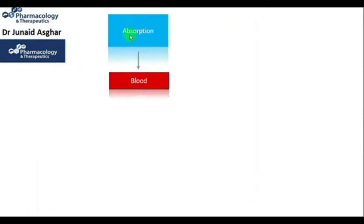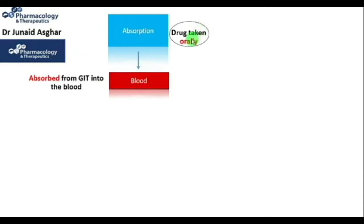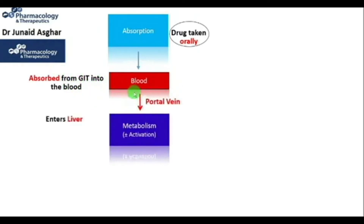Drug absorption involves the movement of a drug from the site of delivery to the blood. If a drug is taken orally, some part of the drug is metabolized in the GIT or the intestinal walls before it is absorbed into the blood. After the drug has been absorbed into the blood, it is transported to the liver via the hepatic portal vein, and at this stage the drug has not yet appeared in the systemic circulation. The liver is the main site of drug metabolism, or biotransformation, and conversion into metabolites.